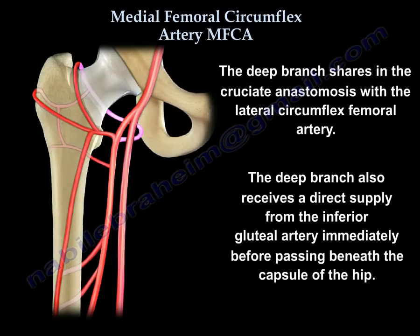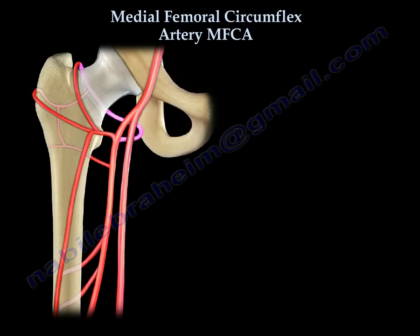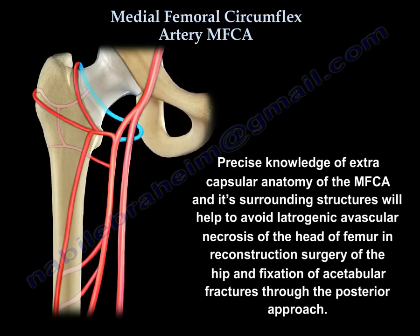The deep branch shares in the cruciate anastomosis with the lateral circumflex femoral artery. The deep branch also receives a direct supply from the inferior gluteal artery immediately before passing beneath the capsule of the hip. Precise knowledge of the extracapsular anatomy of the artery and its surrounding structures will help to avoid iatrogenic vascular necrosis of the head of the femur in reconstruction surgery of the hip and fixation of acetabular fractures through the posterior approach.